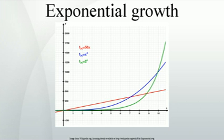Genetic complexity of life on Earth has doubled every 376 million years. Extrapolating this exponential growth backwards indicates life began 9.7 billion years ago, potentially predating the Earth by 5.2 billion years.